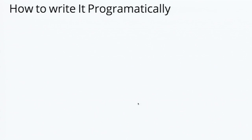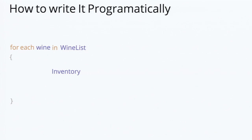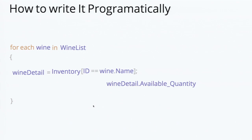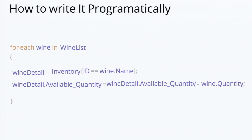First, what we need is the wine list, then the iteration. We assign a variable for each and every row and iterate through it. That is going to be the inventory form. We update the filter based on the wine, assign the result to the variable, make use of the variable to get the available quantity, get the user-given quantity, subtract it out, and update the same to the wine detail — which is nothing but the inventory.